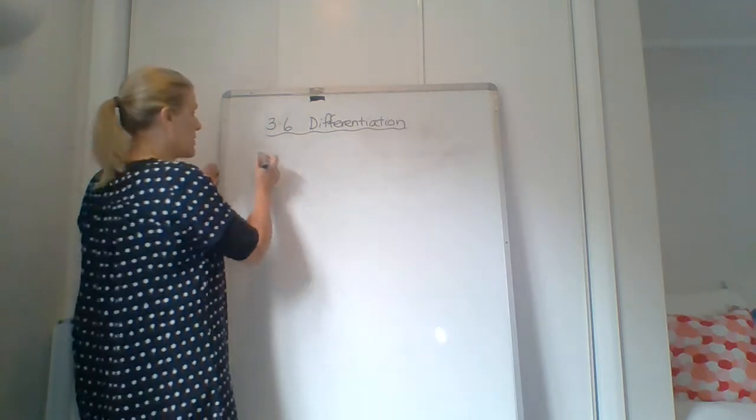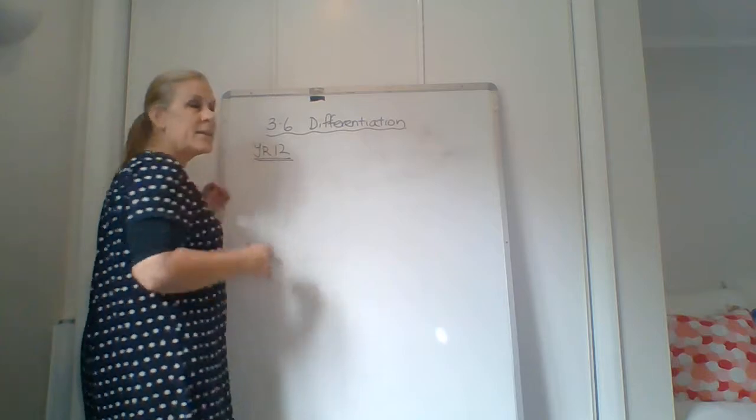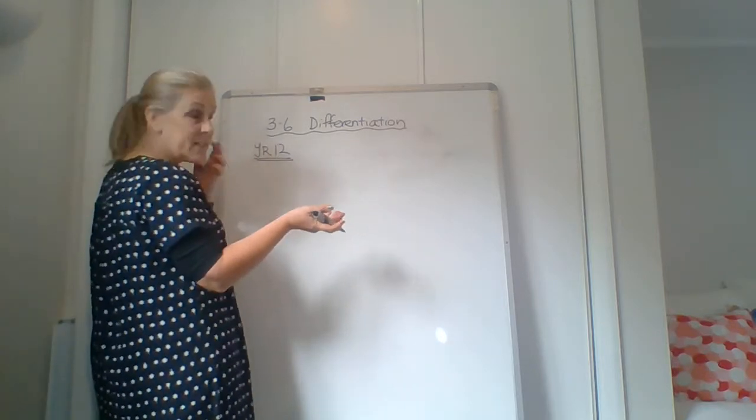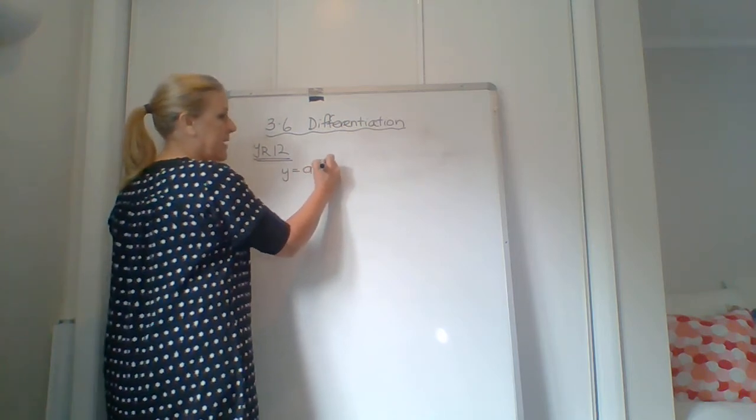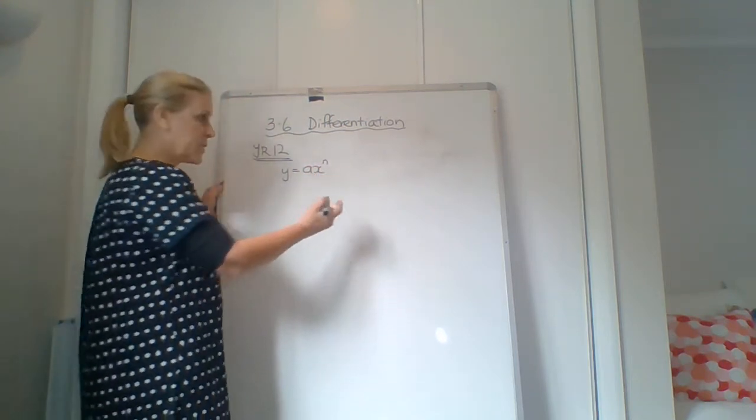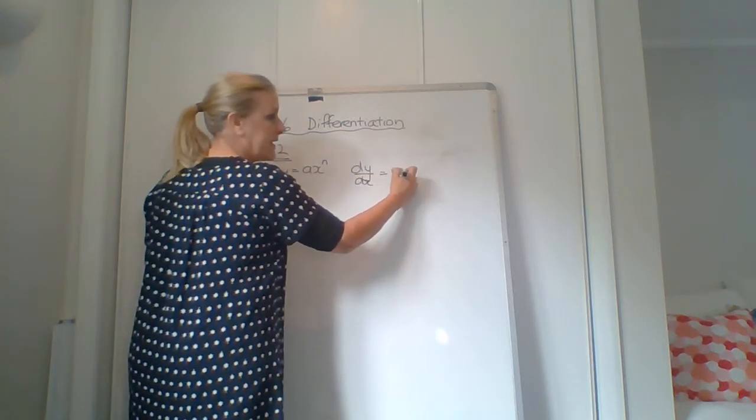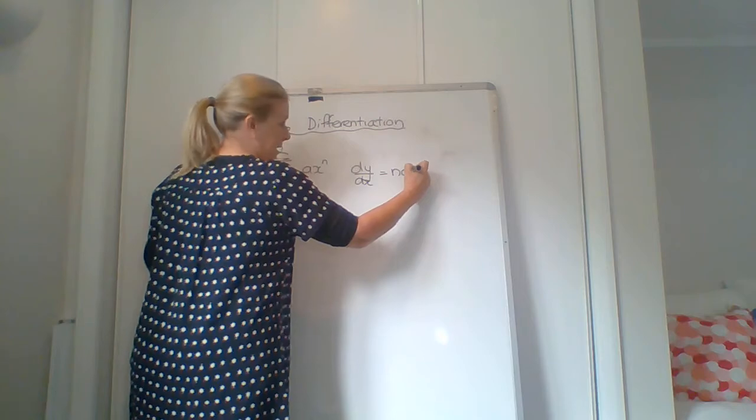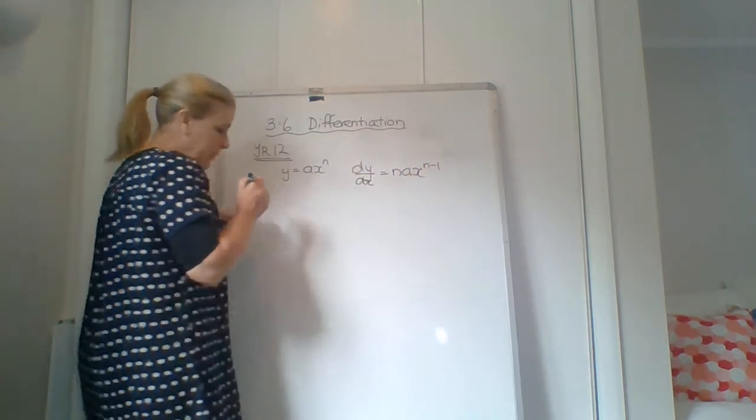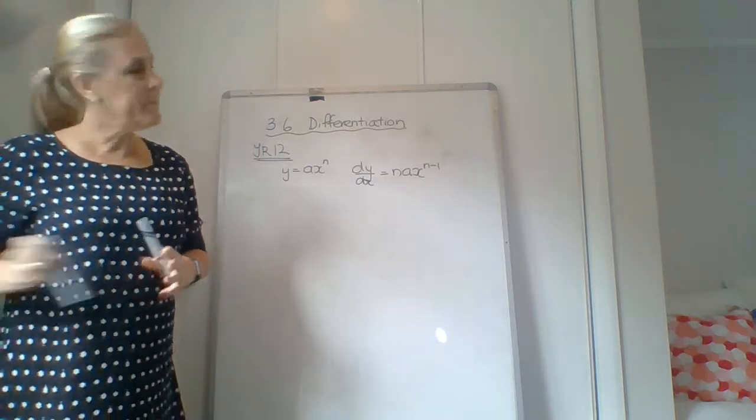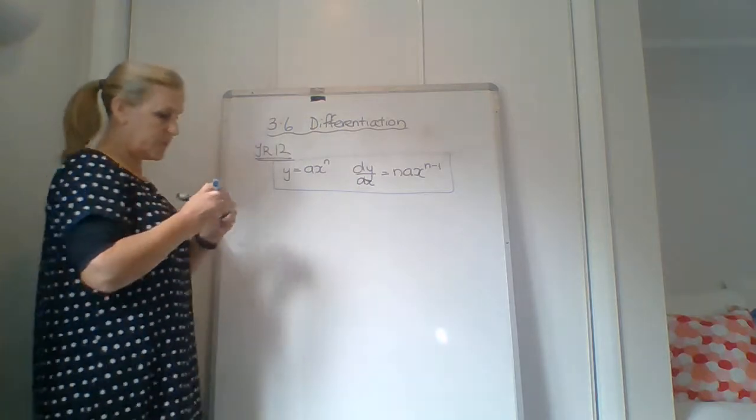So first of all, I want to have a look at what you did last year. So in year 12, there's this formula they give you. And you get it this year as well. And it goes y equals ax to the power n. And when we differentiate that, we get dy by dx equals n a x n minus 1. Alright, so that's given to you. It's a formula. And it's on your formula sheet in some sort of way.